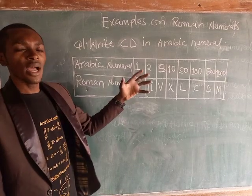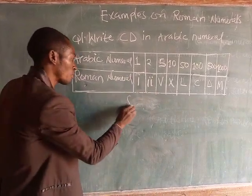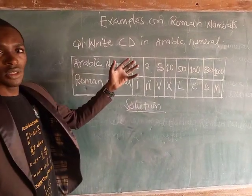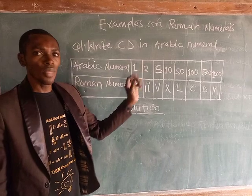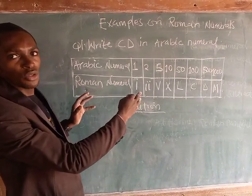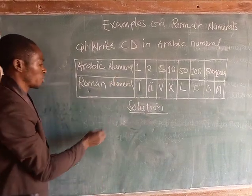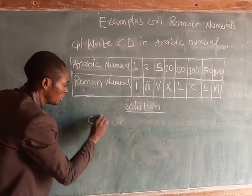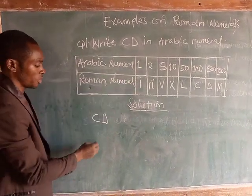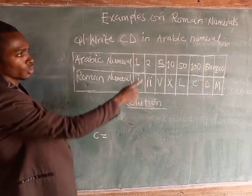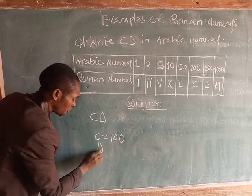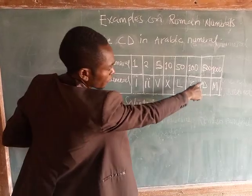We are asked to write CD in Arabic numerals, so we go straight to solving the question. To solve this question it is a very simple thing to do, but we need the aid of these standards — a standard for Arabic numerals and Roman numerals. From the board we can see that C is equal to 100, and D is equal to 500.